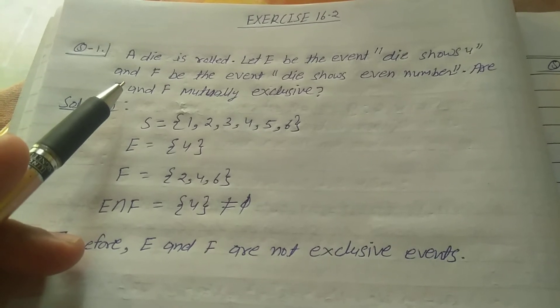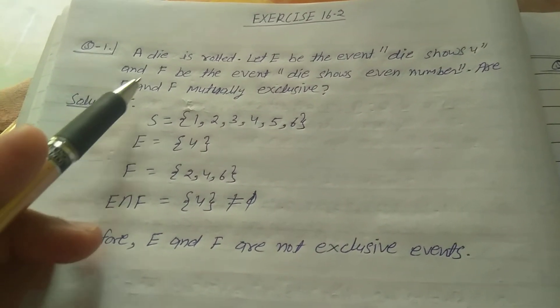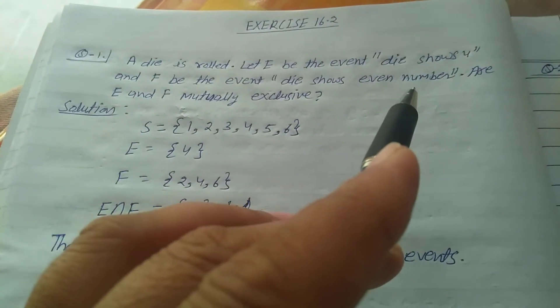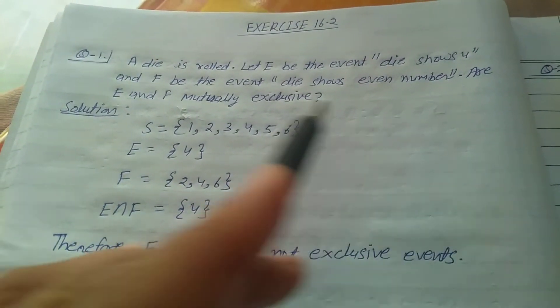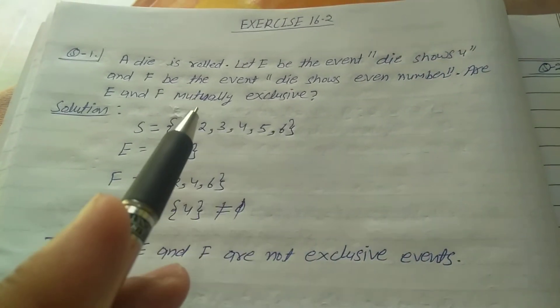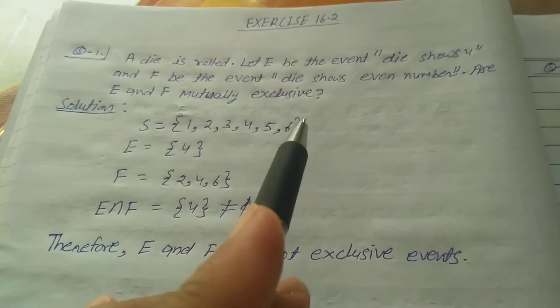Explain Q1. A die is rolled. Let E be the event die shows 4, and F be the event die shows even number. Are E and F mutually exclusive?